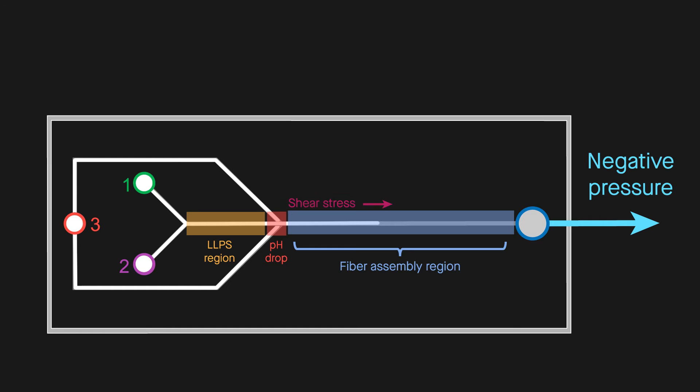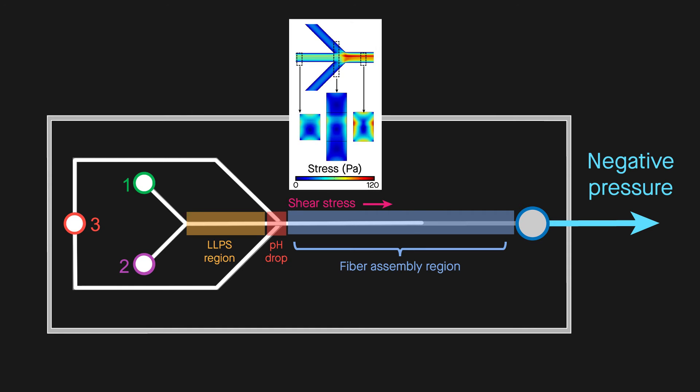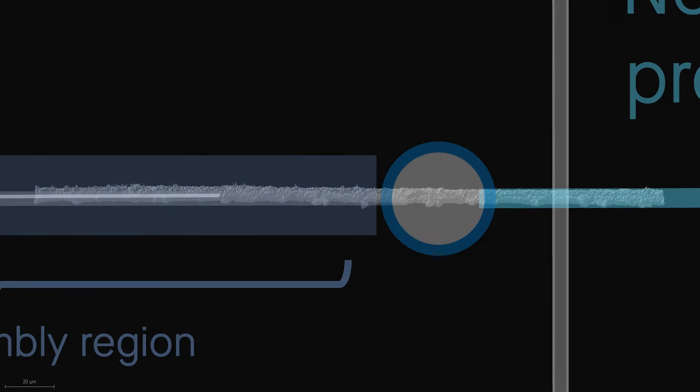Traveling along the straight channel, shear stress then further promotes assembly of long fibers. The resulting fibers show a clear hierarchical structure that are highly flexible and stable.